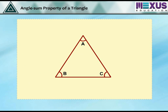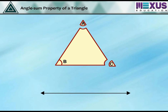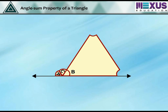Draw any triangle ABC on a piece of paper and cut it out. Cut out the marked angles A and C. Draw a straight line on a sheet of paper. Place the cut-outs of angle A and angle C adjacent to each other on the straight line, then place angle B adjacent to angle C. Since all angles of a triangle, when placed adjacent to each other, completely fit on a straight line, their sum is equal to a straight angle, i.e., 180 degrees.